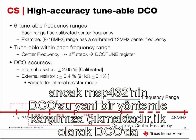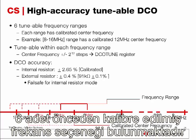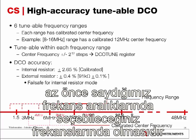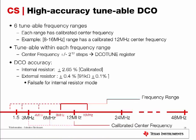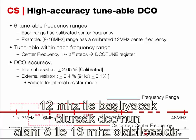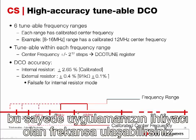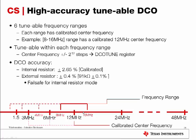The DCO still provides six pre-calibrated frequencies starting at 1.5, 3, 6, all the way to 48 MHz. But what's new is that it allows you to tune to any particular frequency in between these ranges. Starting with a pre-calibrated frequency at, say, 12 MHz, the range for this DCO range will be from 8 all the way to 16 MHz. Using a DCO tune register, you can tune to any frequency value between 8 MHz and 16 MHz, to the accuracy of 2 to the power of 12 steps. This unique capability allows you to on-the-fly retune your DCO to any frequency that your application needs.